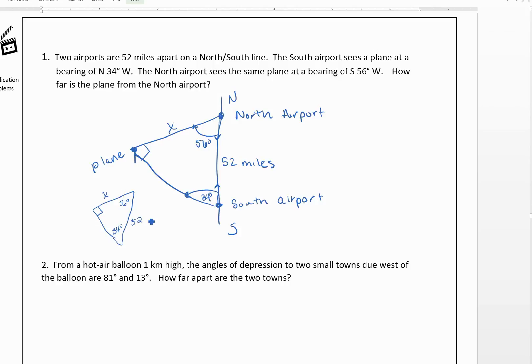Now, what we can do is we can pick either the 56 degrees or the 34. Let's go ahead and use 34 degrees. Now, the x is the opposite side compared to the 34, and then we know the 52 is the hypotenuse. So we want to think with SOHCAHTOA, which one uses opposite and hypotenuse. Well, that would be sine.